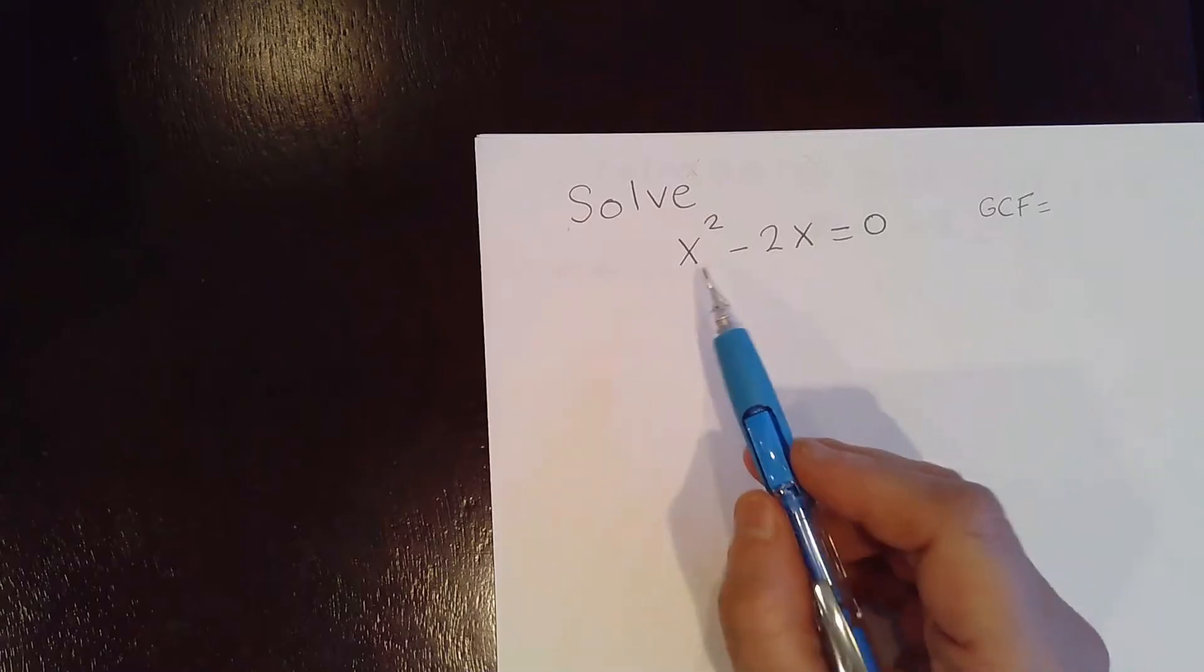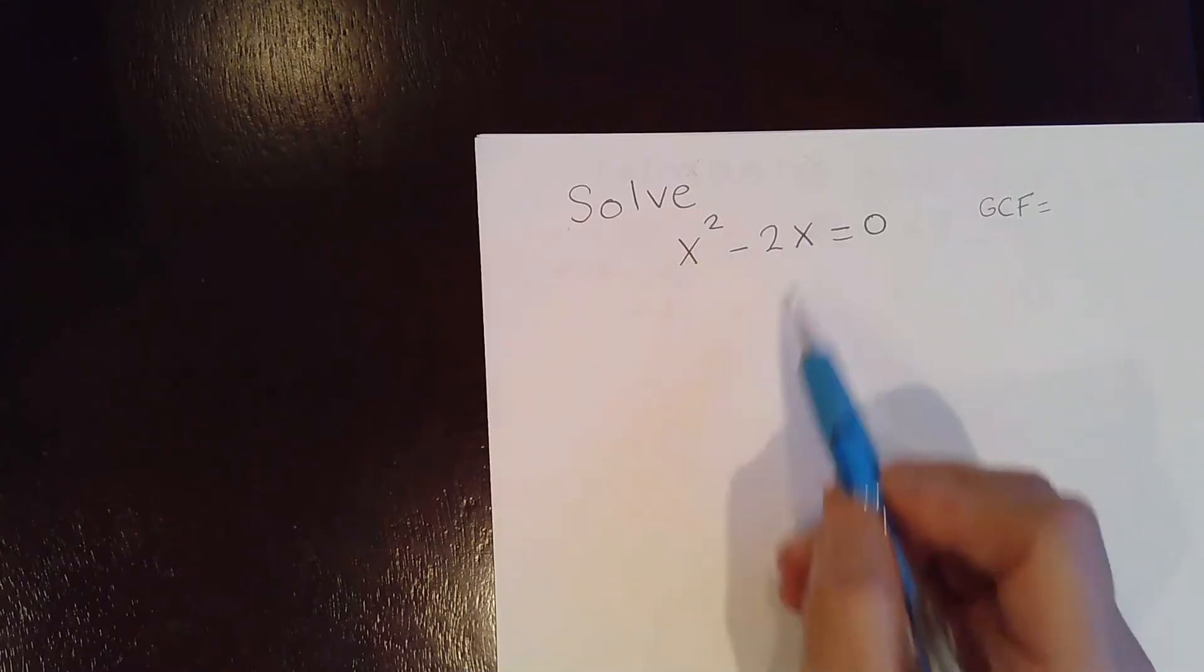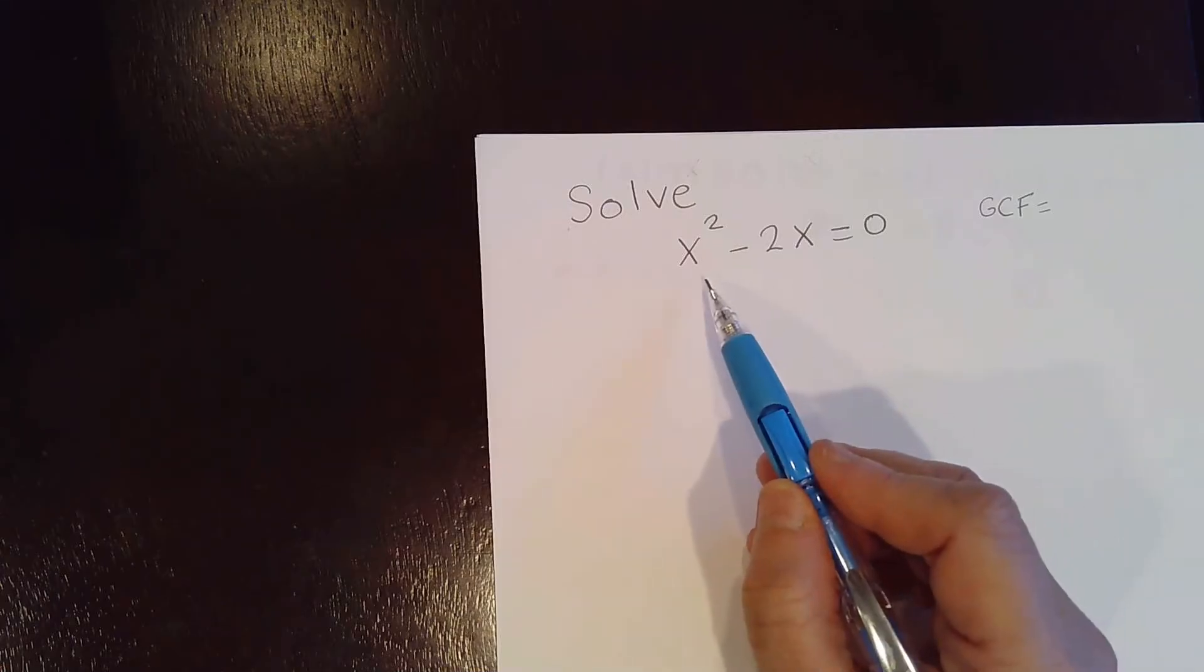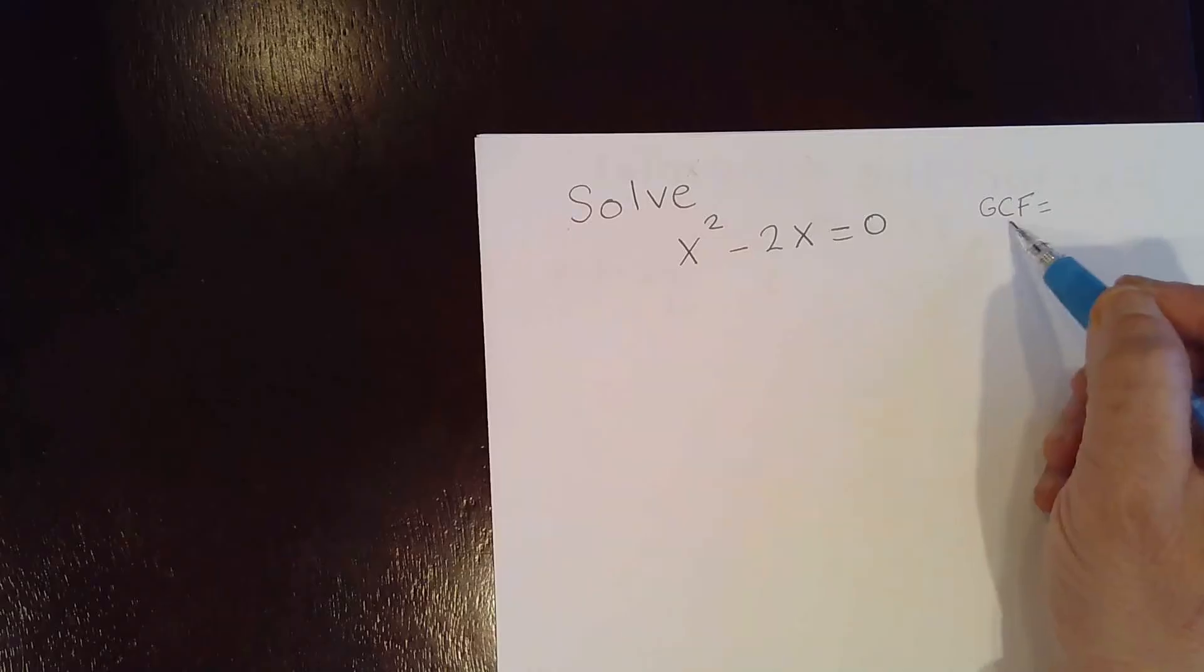You just have x squared, the x squared term, and the x term. Now to solve this quadratic equation, you need to factor the GCF, which is the greatest common factor.